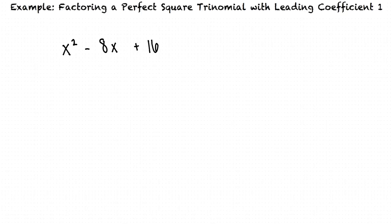Since this is a perfect square trinomial, we can use one of the following formulas to help us factor. A squared plus 2ab plus b squared equals the quantity a plus b squared, and a squared minus 2ab plus b squared equals the quantity a minus b squared.